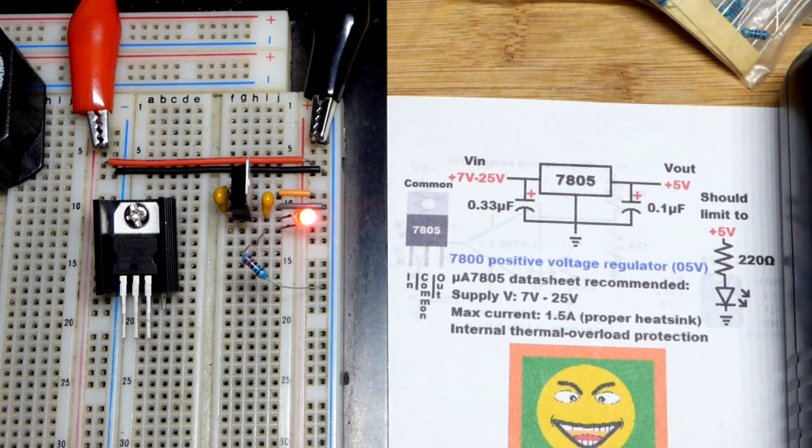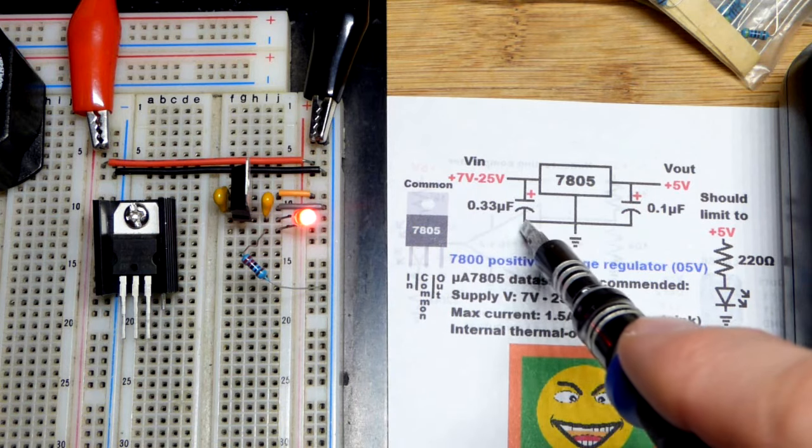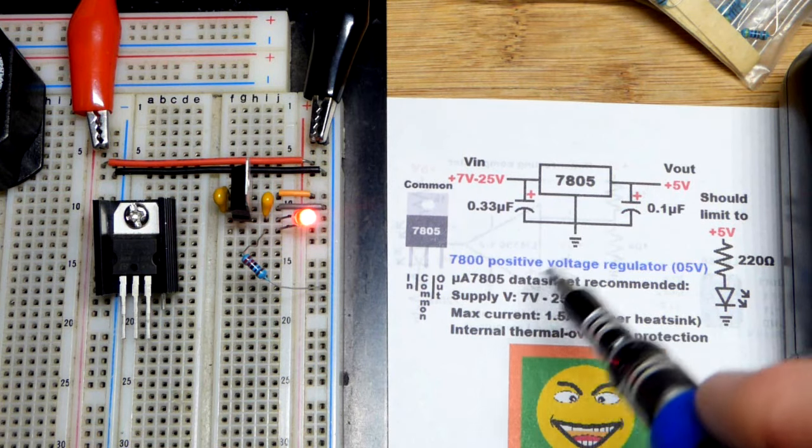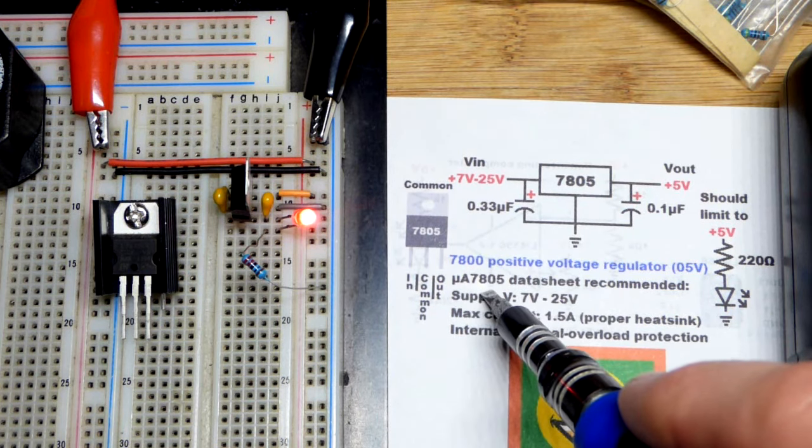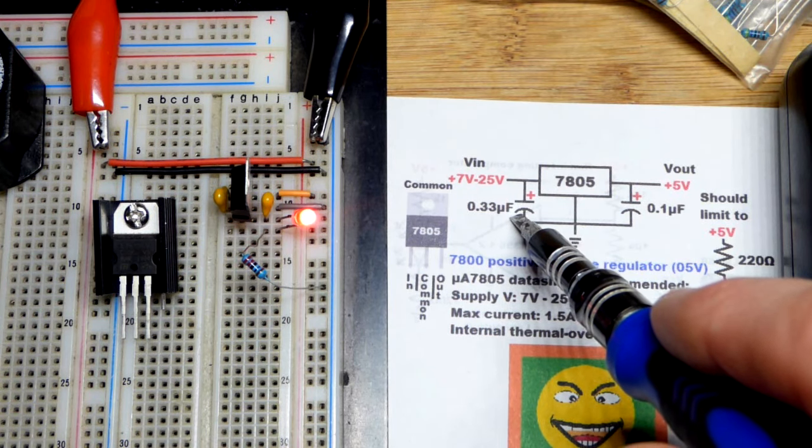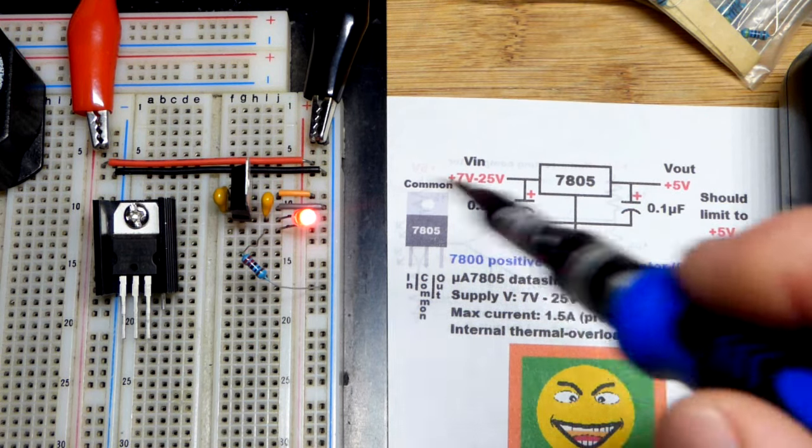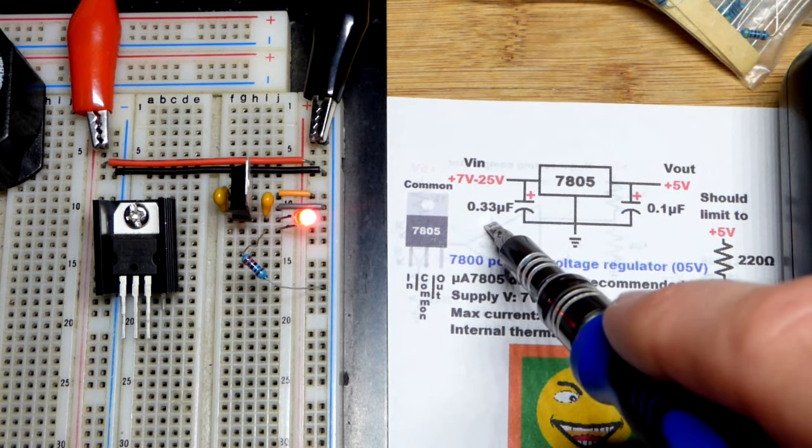Some of these voltage regulators that I have, they give you some weird voltage if you don't have a load, so I'm going to make sure and put a load. Also the datasheet that I looked at, I think was the micro A7805, shows 0.33 microfarad. I actually have a 0.47 microfarad capacitor on there.